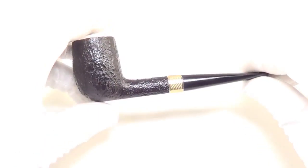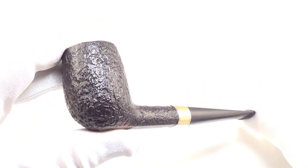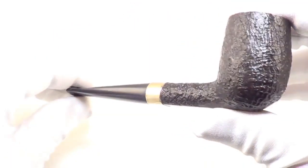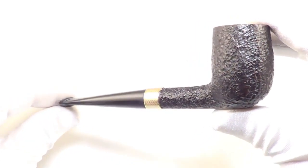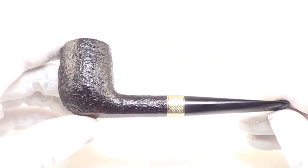Here is an absolutely amazing Dunhill Shell Briar smoking pipe. This is a classic billiard style pipe. It is a group 3 size. As you can see, it has that highly coveted Dunhill gold band around the shank.